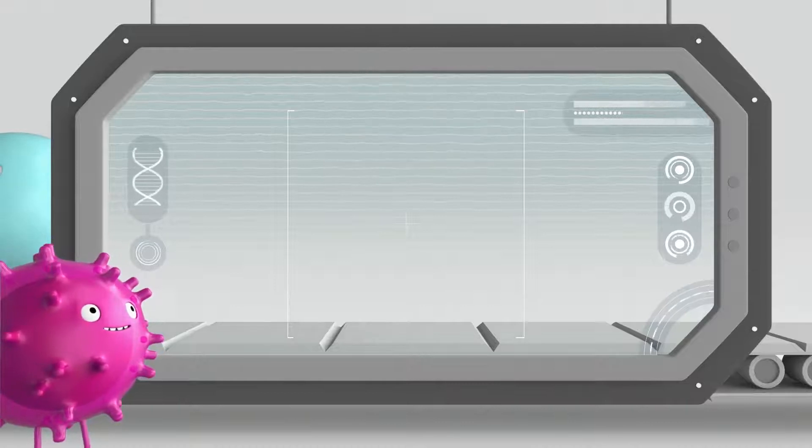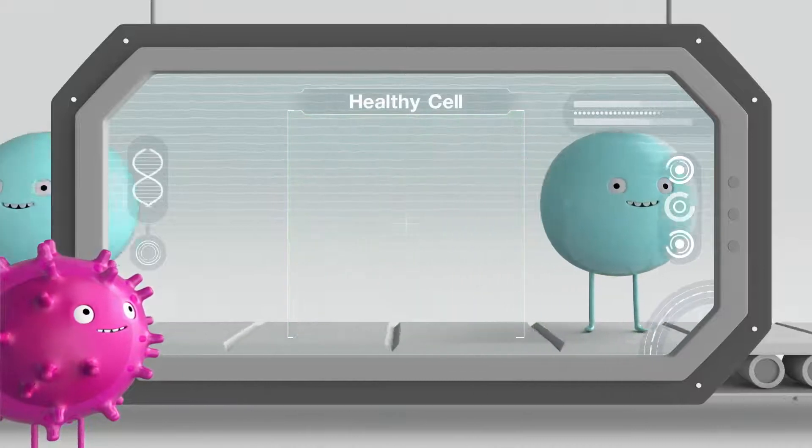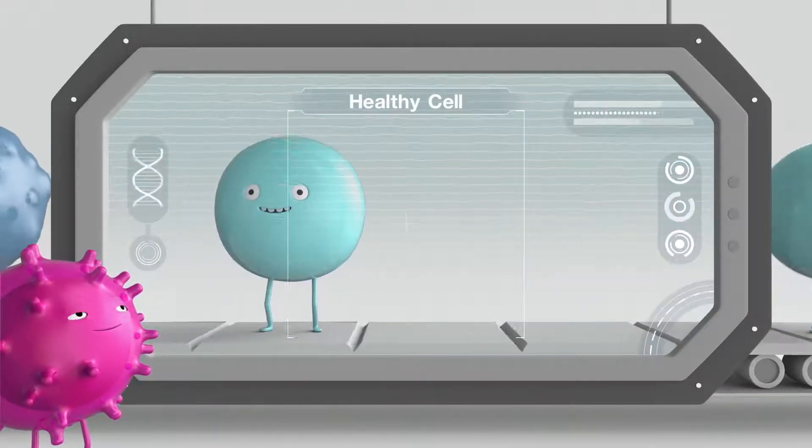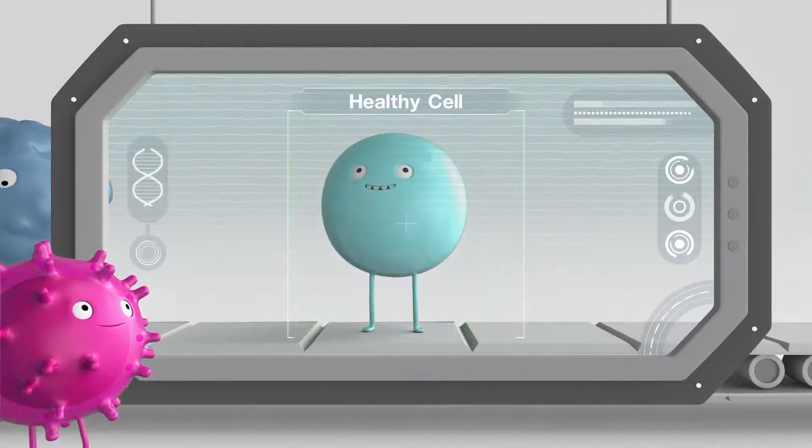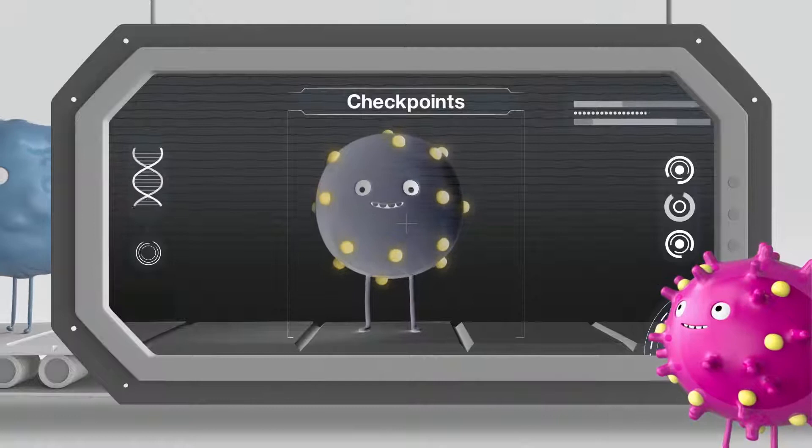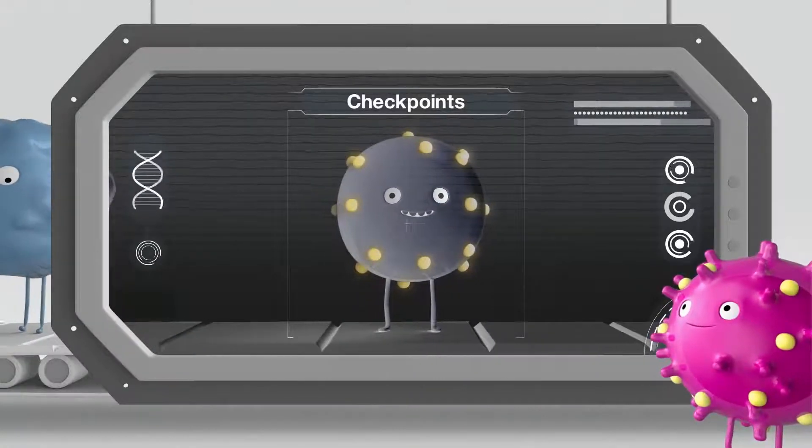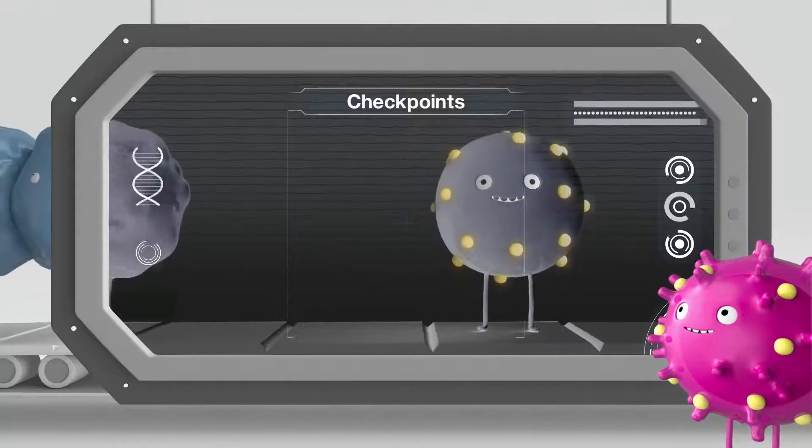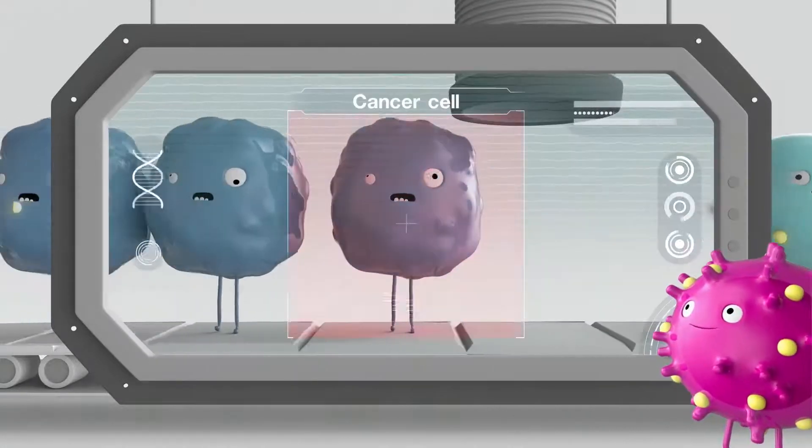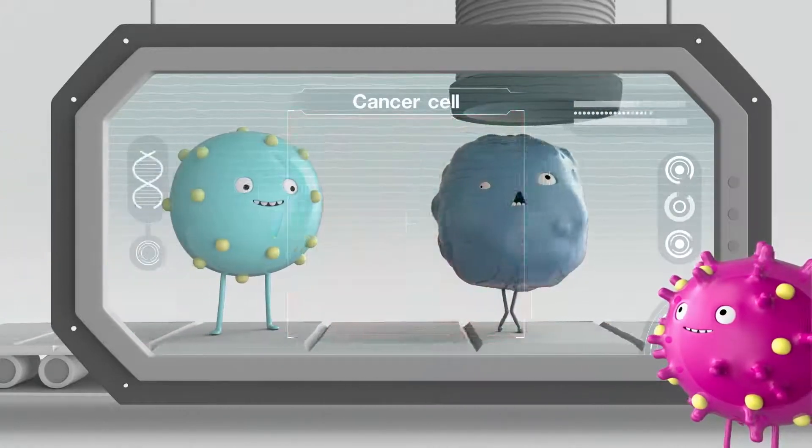Your immune system is very powerful and therefore needs to be carefully controlled. To do this, immune cells and healthy cells work together through the use of special markers called checkpoints. Checkpoints can help your immune system tell which cells are good, your healthy body cells, and which ones are bad, like cancer cells. They also ensure that the immune system's response isn't too strong.